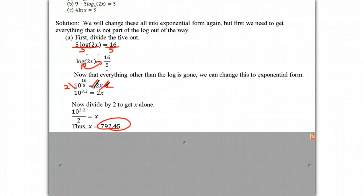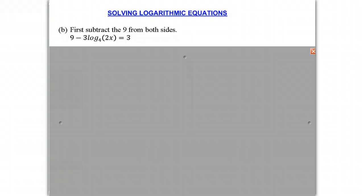So let's review that before we do the next one. If you have a problem like this, you want to get the log to one side and all the other terms to the other side. And then we could do it the way we learned previously. So let's do question B. First, we have to subtract 9 from both sides.